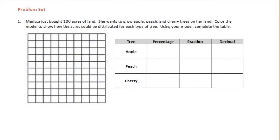Sixth grade module one lesson 24 problem set. Marissa just bought 100 acres of land. She wants to grow apple, peach, and cherry trees on her land. Color the model to show how the acres can be distributed for each type of tree. Using your model, complete the table.